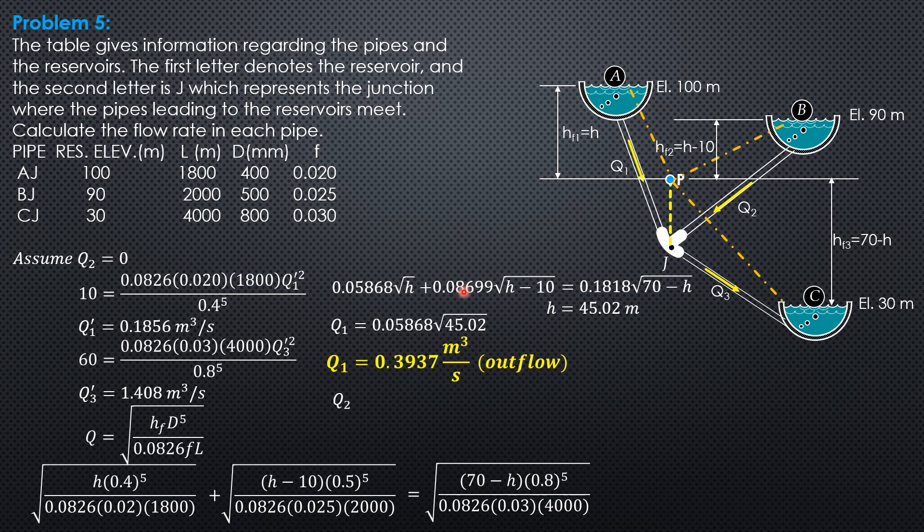Q2 is this term here, 0.08699 square root of 45.02 minus 10. So Q2 is also outflow, 0.5148 cubic meter per second.